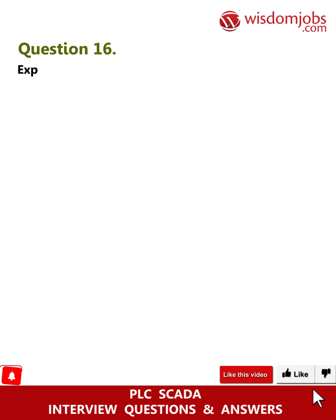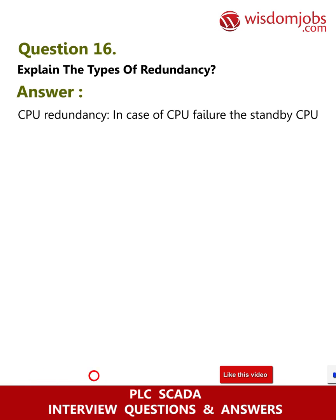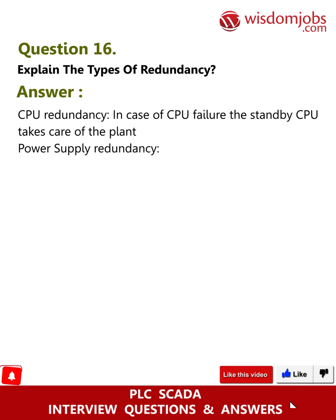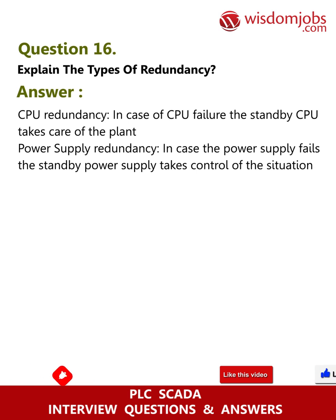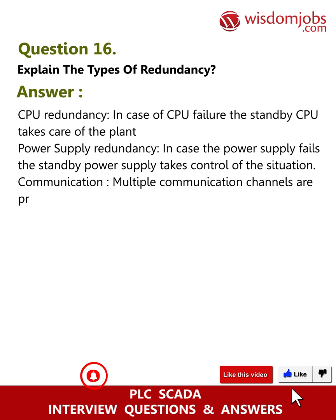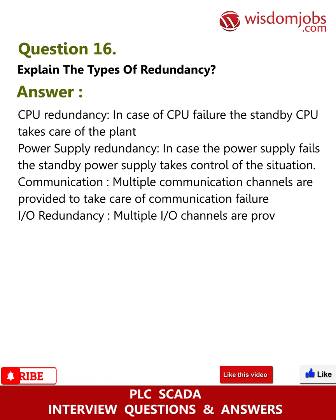Question 16: Explain the types of redundancy. Answer: CPU redundancy — in case of CPU failure, the standby CPU takes care of the plant. Power supply redundancy — in case the power supply fails, the standby power supply takes control of the situation. Communication — multiple communication channels are provided to take care of communication failure. RIO redundancy — multiple IO channels are provided to take care of input or output failure.